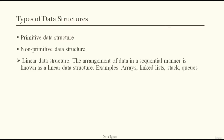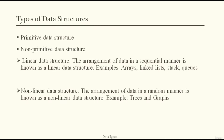There are different types of data structures. Primitive data structures are based on primitive data types like integer and character. Non-primitive or derived data structures are classified into two groups: linear data structures, where data is arranged sequentially (e.g., arrays, linked lists, stacks, queues), and non-linear data structures, where arrangement is random (e.g., trees and graphs).